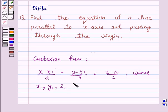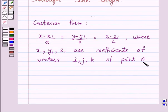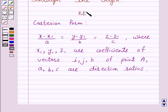are coefficients of vectors i, j, k of point A, and a, b, c are direction ratios. So this is a key idea behind the question. We will take the help of this key idea to solve the above question.